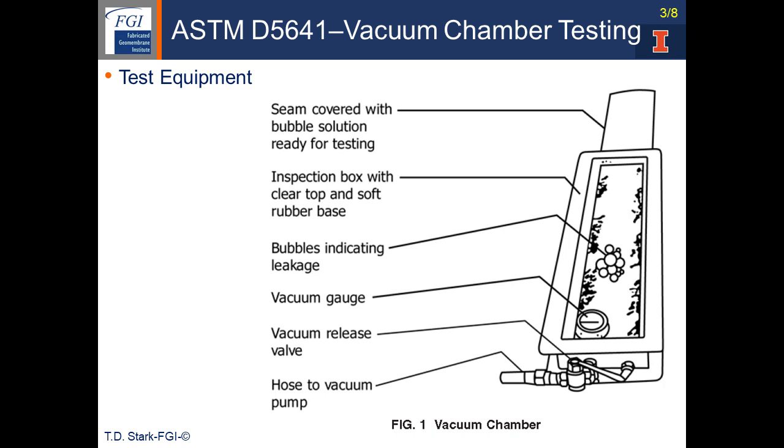In the prior video, that was a field seam being tested by the vacuum chamber. This is a diagram, figure one, from the test method and the chamber is shown on the right. A pressure gauge is inside the chamber or can be outside the chamber to measure the pressure applied. That pressure is actually a vacuum which tries to pull air from the underside of the geomembrane through the seam. If it is able to bring air through the seam, bubbles appear in the vacuum chamber, and those bubbles are accentuated by the soapy water that was applied to the seam in the first video.